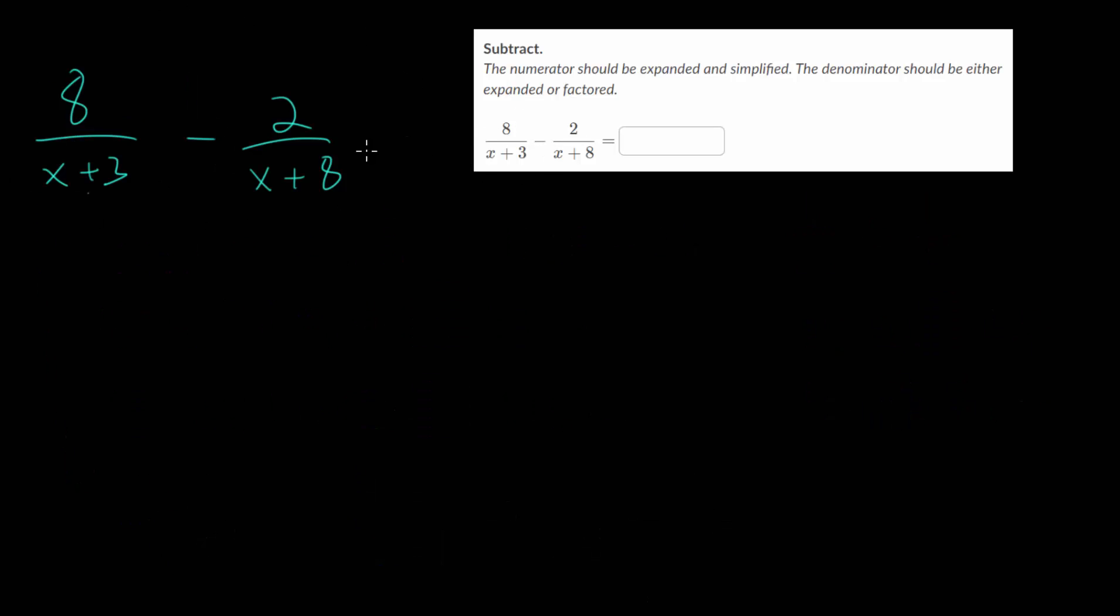So I've rewritten our problem here, these two rational expressions that we're subtracting. And the first step, since we're subtracting fractions, is to find that common denominator. And so we're just going to take the two denominators and multiply them together. So x plus 3 times by x plus 8, and that will be a common denominator.